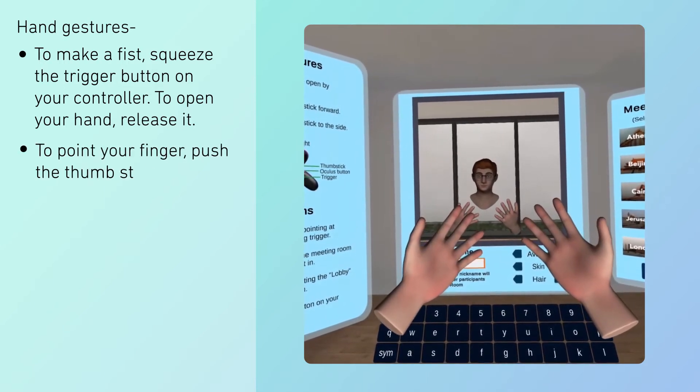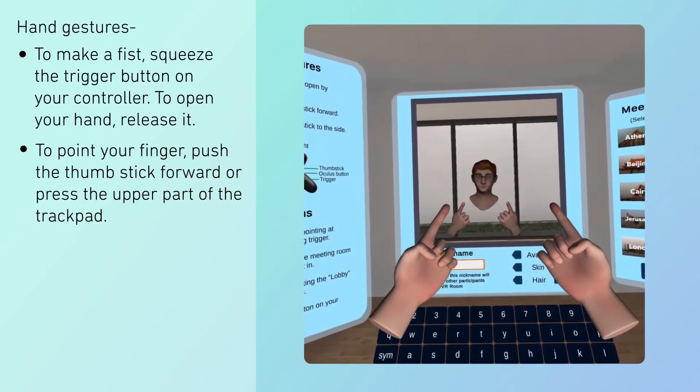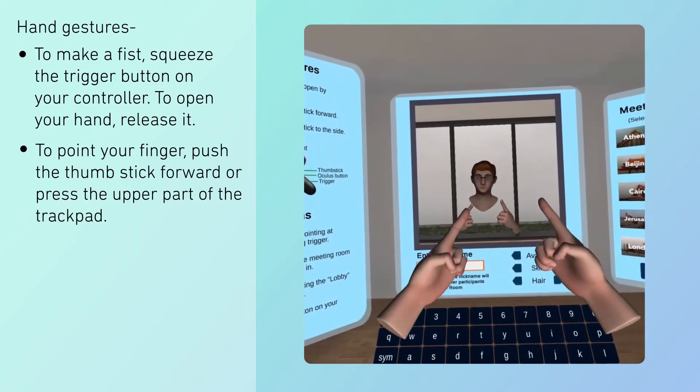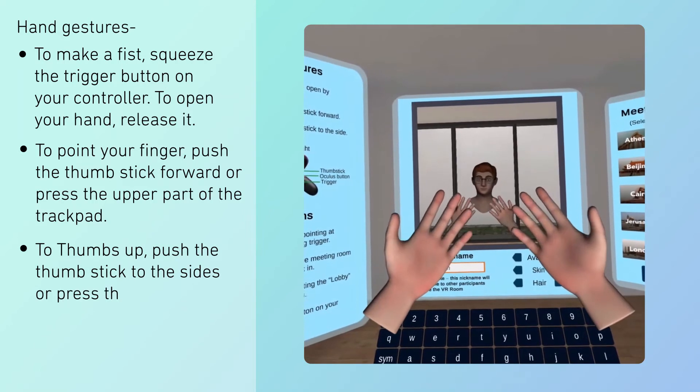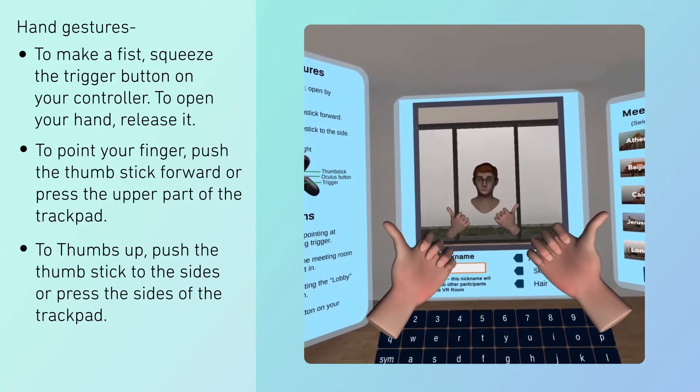To point your finger push the thumbstick forward or press the upper part of the trackpad. To thumbs up push the thumbstick to the sides or press the sides of the trackpad.